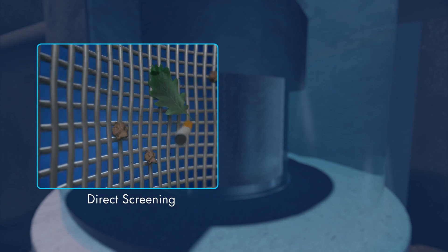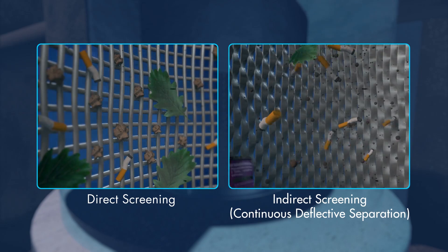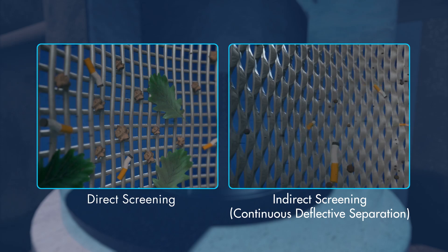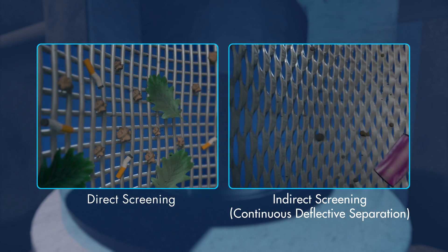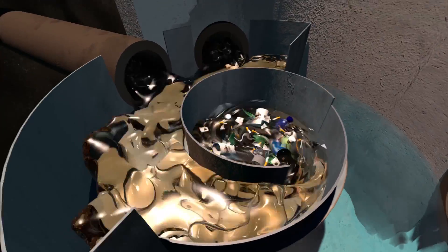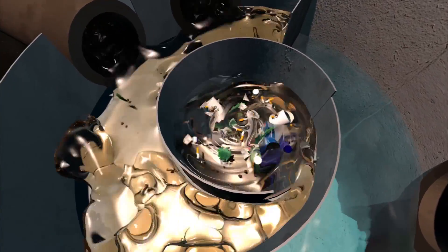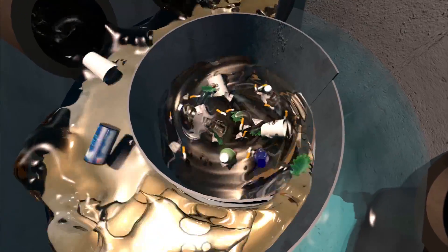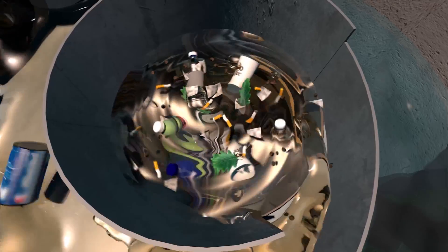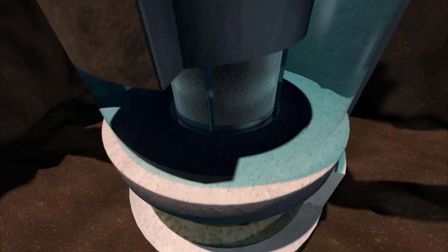Unlike traditional screens that can easily become clogged, water velocities within the swirl chamber continually deflect debris off the specially designed screen to keep it clean. The combination of swirl concentration and indirect screening forces floatables and solids to the center of the separation chamber. 100% of floatables and neutrally buoyant debris larger than the screen aperture are trapped in the chamber, and sediment settles into an isolated sump.